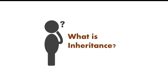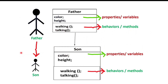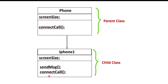I will explain inheritance in short because I have already made a separate video on inheritance and types of inheritance in detail, and the link has been mentioned in the description. So inheritance is a mechanism in which one class can inherit properties or behavior — that is, variables and methods — from another class. Same as the father and son relationship, in which the son receives or inherits properties and behavior from his father. Similarly, technically, iPhone class inherits properties and behavior from phone class. To receive or inherit properties and behavior from one class to another is nothing but inheritance.